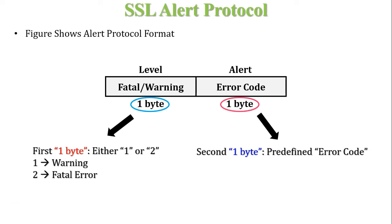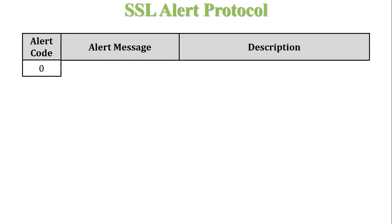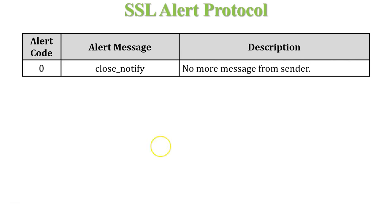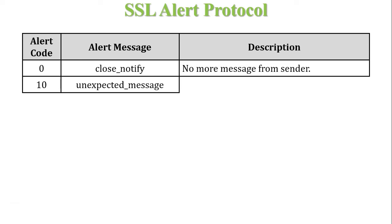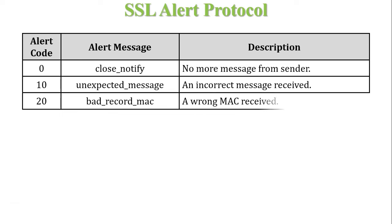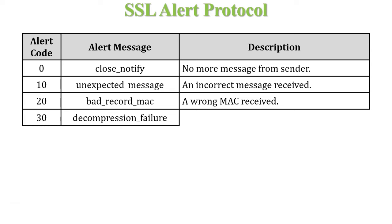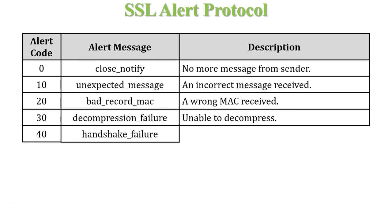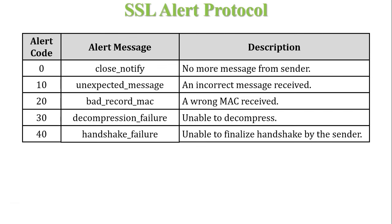Different error codes in SSL Alert Protocol: code 0 indicates close notify, meaning no more messages from the sender. Code 10 indicates unexpected message — an incorrect message received on either side. Code 20 indicates bad record MAC (Message Authentication Code), meaning a wrong MAC was received. Code 30 indicates decompression failure — unable to decompress on either side. Code 40 indicates handshake failure — unable to finalize handshake by the sender.